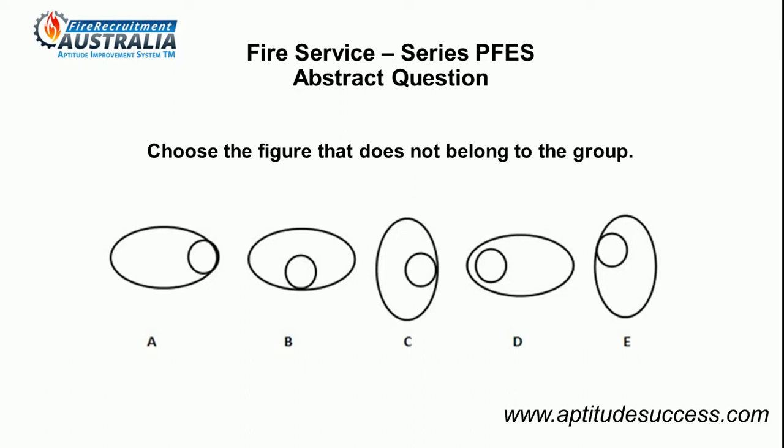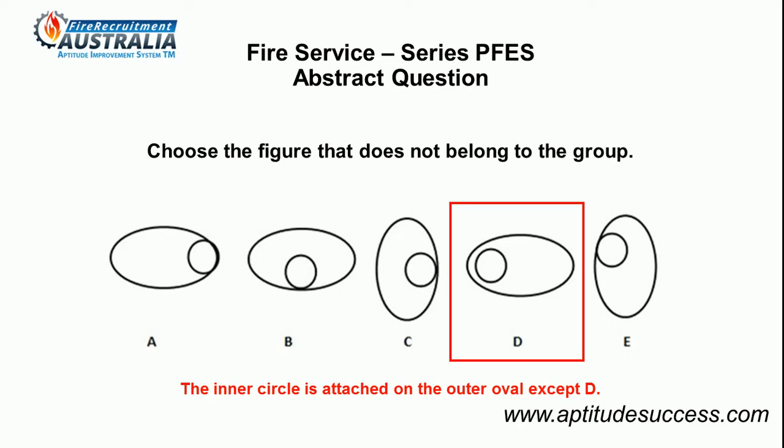Observing carefully, we can find that the inner circle is attached on the outer oval except D. Hence, figure D does not belong to the group.